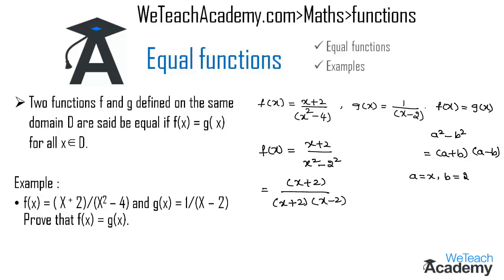We cancel (x + 2) in the numerator and denominator and get f(x) = 1 / (x - 2). The given function g(x) is also equal to 1 / (x - 2), so f(x) = g(x).